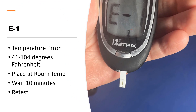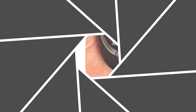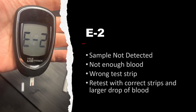E1 indicates that the meter is being used at a temperature out of the recommended range. It's recommended you use it between 41 and 104 degrees Fahrenheit. If you get this error, place the meter at room temperature, wait 10 minutes, and retest.